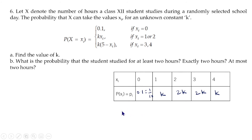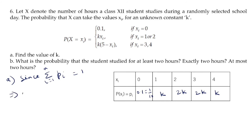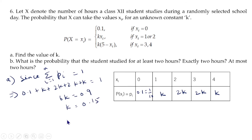Since the sum of all probabilities equals 1, we have: 0.1 + K + 2K + 2K + K = 1, so 6K = 1 − 0.1 = 0.9, giving K = 0.9/6 = 0.15. Therefore the value of K is 0.15.